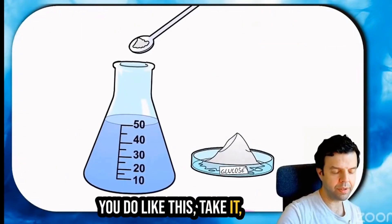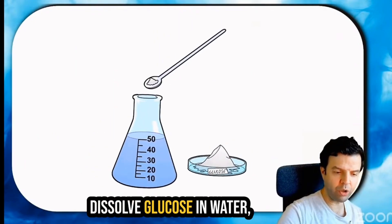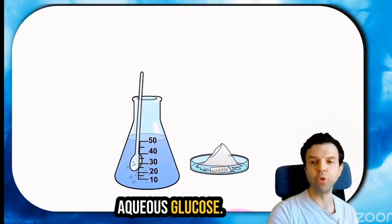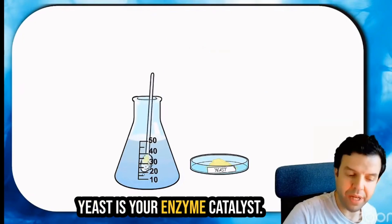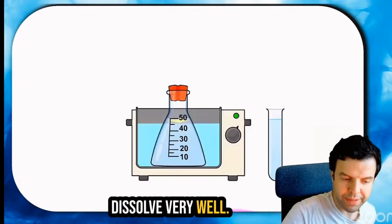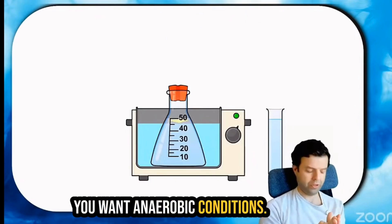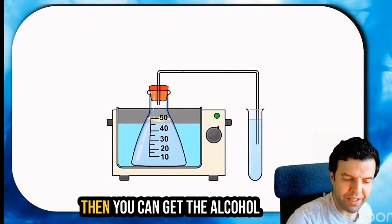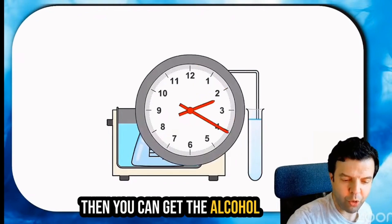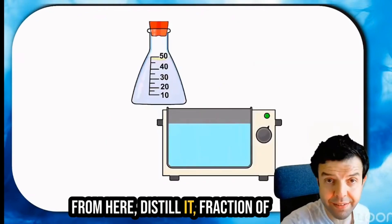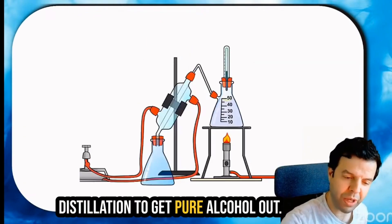That's with the help of yeast. You do like this. Take it, dissolve glucose, aqueous glucose. Dissolve very well. You must seal the flask because you want anaerobic conditions. No oxygen. You can get the alcohol from here. Distill it to get pure alcohol out.